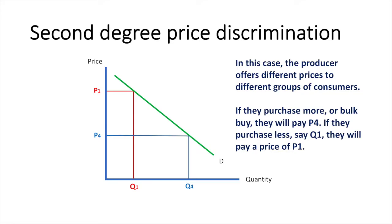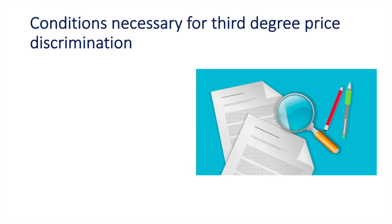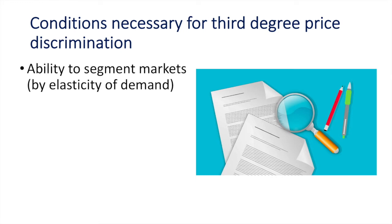Next up is third degree price discrimination. For third degree price discrimination to take place, these conditions must hold true. First, the firm must be able to segment their markets by elasticity at minimal cost. In the UK, you can purchase train tickets for off-peak and peak travel — the cost to separate the markets is minimal. Peak travellers are likely to have inelastic demand, whereas off-peak travellers who have more flexibility are more sensitive to price changes.